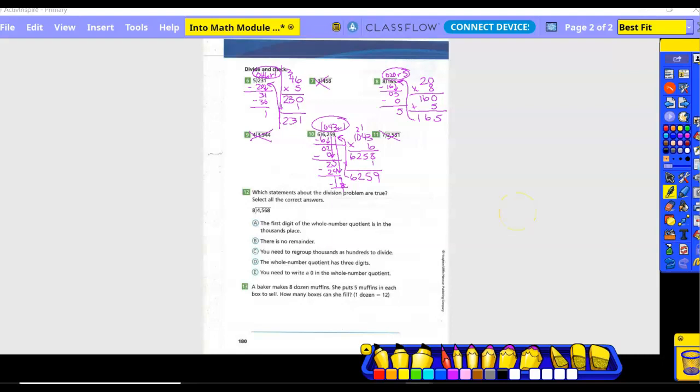Number 12. Which statements about the division problem are true? Select all the correct answers. So we're going to work it out over here to the side so we can see what would all apply. So we went ahead and worked it out. And we got 571. So what would we mark? The first digit of the quotient is in the thousands place. Did we start in the thousands place? No. Nope. We started in the hundreds. So that would not work. There is no remainder. That one's correct because we don't have a remainder. You need to regroup thousands as hundreds to divide. So did we have to move from the thousands to the hundreds? Yes. Yes. So the whole number quotient has three digits. Yes. Because does a zero at the front count? No. So there is three digits in our quotient for our answer.